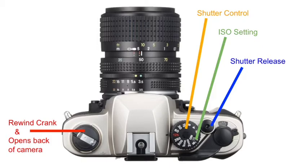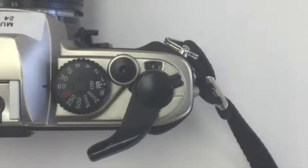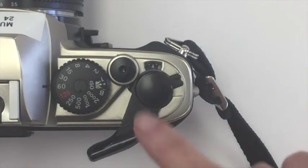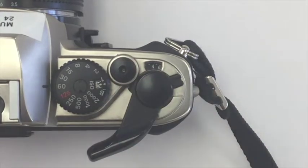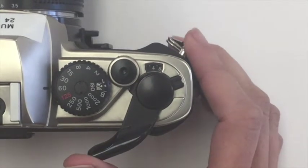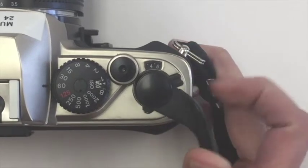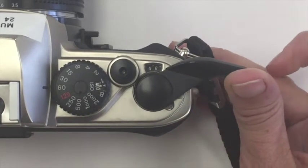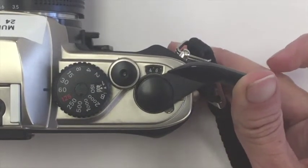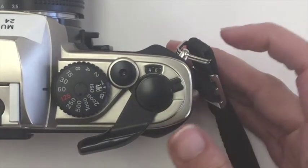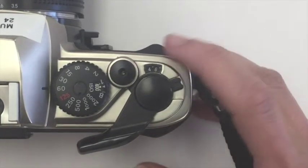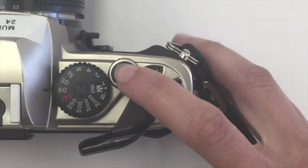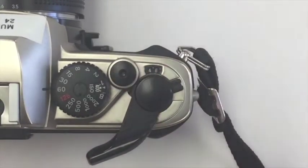The shutter release works in conjunction with the film advance lever. The film advance is what moves your camera to the next frame, a.k.a. the next photograph. In order to advance your film, you pull the advance lever out all the way and then let go, allowing it to swing back. Once it swings back, you're able to take a picture by pressing the shutter release.